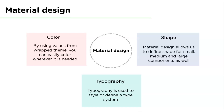Then there is typography. In the material theme, there are material typography styles which are used to style or define a type system. With the help of the typography class, we can customize fontStyle, fontWeight, fontFamily, letterSpacing, textDecoration, and many more attributes. Third is shape. Material design allows us to define shape for small, medium, and large components. Just like typography, we can easily create shapes.